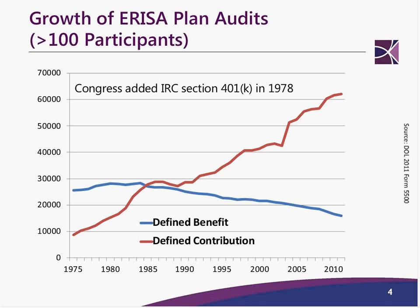The slide showing the growth of ERISA plan audits is very interesting. Back in 1975, the majority of plans were defined benefit plans with just a few defined contribution plans. Now it's three to four times as many defined contribution plans, and as firms get out of defined benefit plans, we expect this trend to continue, especially as smaller organizations find it easier to set up 401k-type plans.